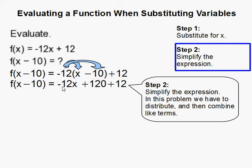That gives me negative 12x plus 120 plus the 12, and then what we need to do after that is combine these like terms. This gives us the answer and that completes the problem.